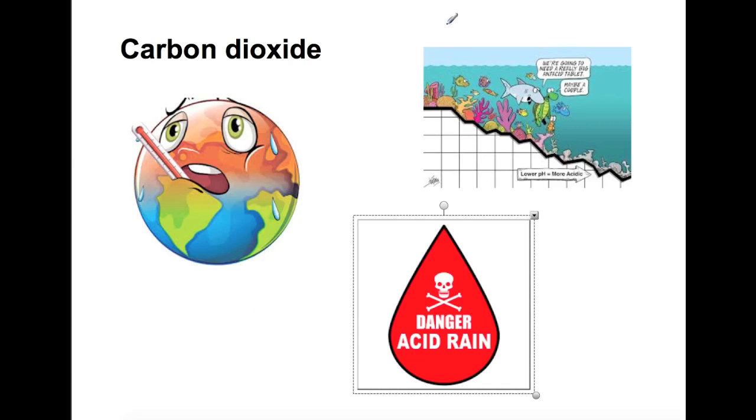Other things which are a problem due to carbon dioxide are ocean acidification. This has an effect on the coral life within the ocean and therefore other life within the ocean too. And finally acid rain. Carbon dioxide can contribute towards acid rain. It is a non-metal oxide which is slightly soluble in water.